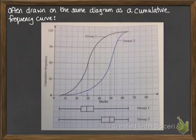So we've got these two groups here, both groups shown on the same cumulative frequency curve, and then each of the box and whisker plots is put underneath it.